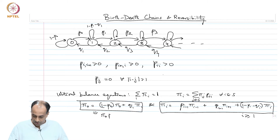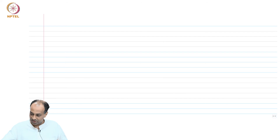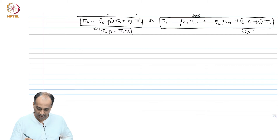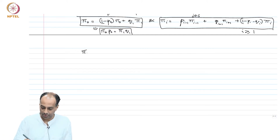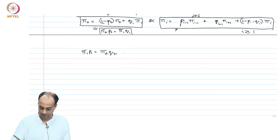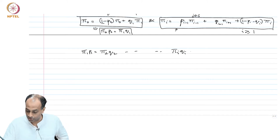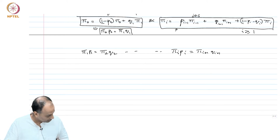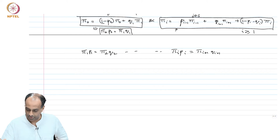If you simplify, you just get: pi_0 * P_0 = pi_1 * Q_1. You can rearrange the equation to get that. And then if you plug this into the equation for pi_1 and rearrange, you get pi_1 * P_1 = pi_2 * Q_2, and so on. You can use induction to show that pi_i * P_i = pi_{i+1} * Q_{i+1} for all i.